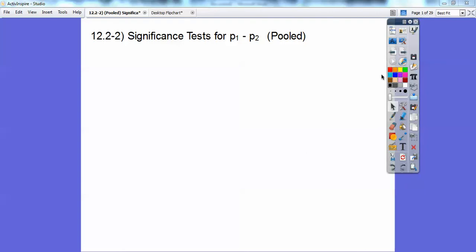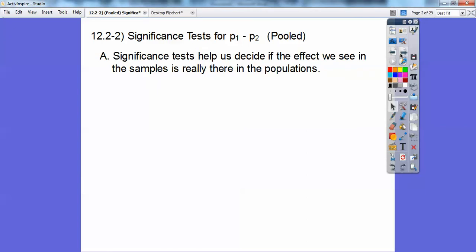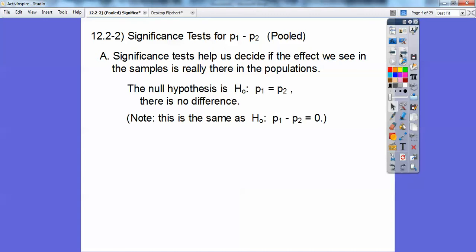Significance test helps us decide if the effect that we see in the samples is really there in the population. So the null hypothesis, just like before, is there is no change. The first proportion equals the second proportion. They might subtract P2 from both sides and get P1 minus P2 equals zero. This just says the difference between the two is zero. There's no change.